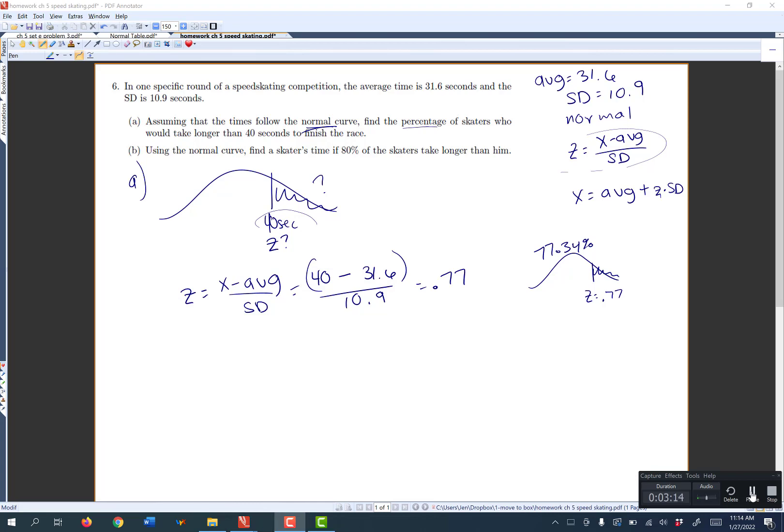Remember, our table only gives us areas to the left. To find the area to the right, I have to do 100% minus that. So 100% minus 77.34% gives me 22.66%.